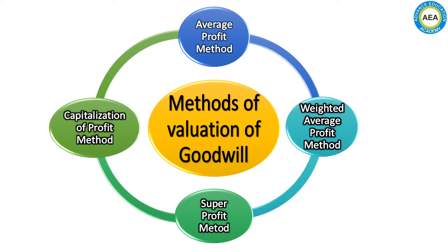There are four methods of valuation of goodwill. The first one is the average profit method, the second one is the weighted average profit method, the third one is the super profit method, and the fourth one is the capitalization of profit method.